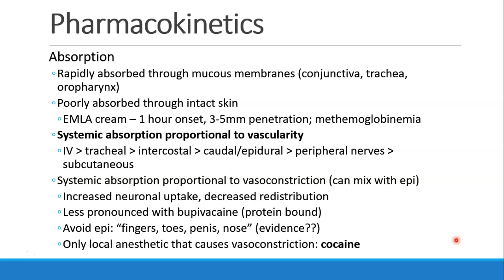Usually when we give local anesthetics, either we're putting them on mucous membranes or we are injecting them or applying them to some tissue. Local anesthetics can be injected in one place but can be absorbed into the systemic circulation, and the more vascular the area of the body is, the more uptake into the systemic circulation we'll see. Giving it into an IV is the most systemic of all. After that, the trachea and intercostal injections tend to be very vascular, then caudal or epidural injections, then peripheral nerve blocks, and finally subcutaneous injection will have the least vascularity and therefore the least risk of systemic absorption.